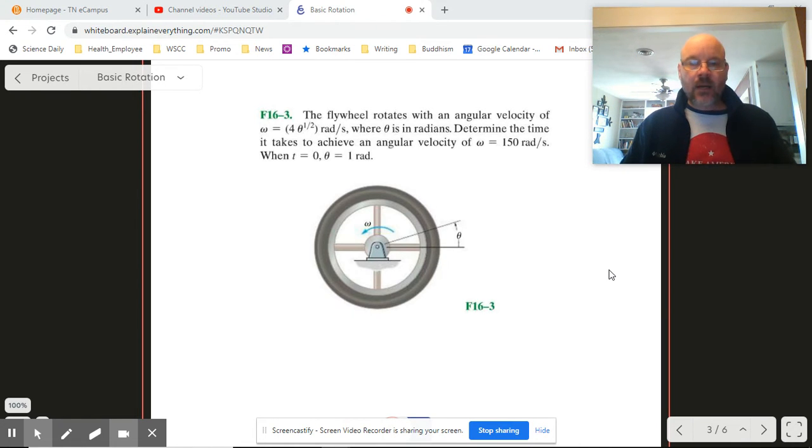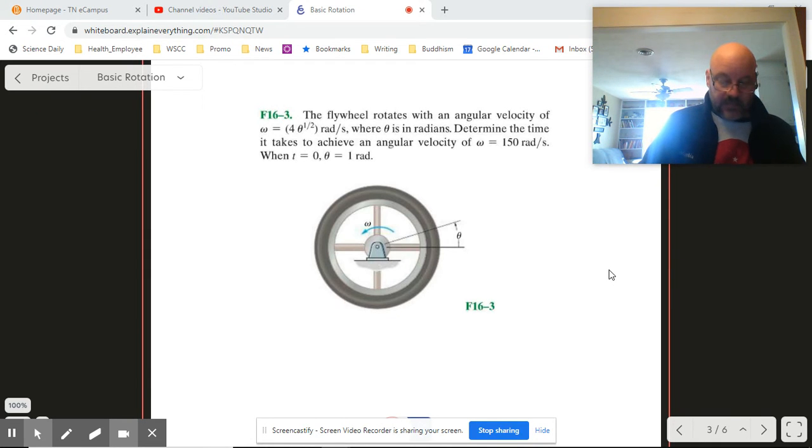So we've got our flywheel, and it says it rotates with an angular velocity of omega is 4 root theta. All right, okay. So that's a little odd.